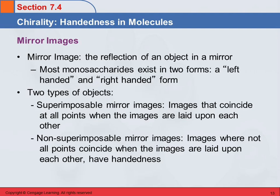A mirror image is just the reflection of an object in a mirror. There are two different kinds of objects — and this refers not only to molecules but to anything — there are superimposable mirror images and non-superimposable.